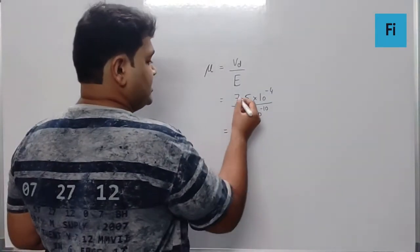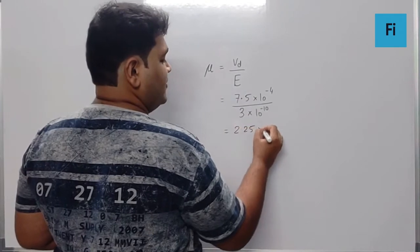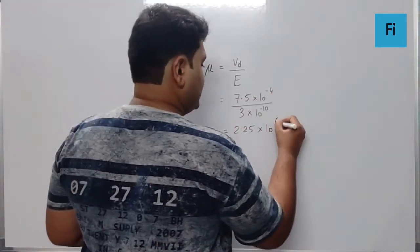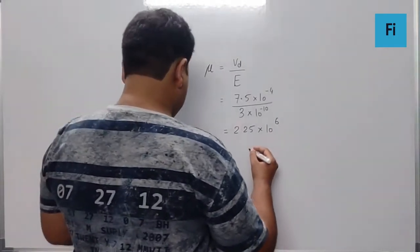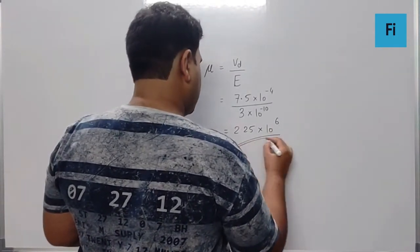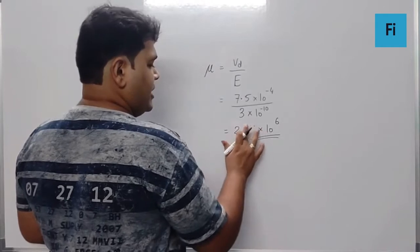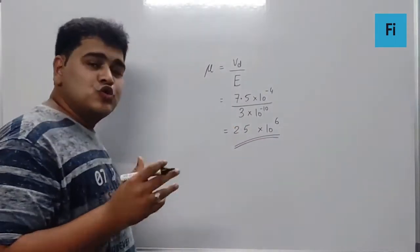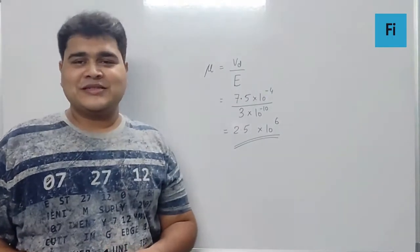That means this is going to be 2.25 × 10^(10-4) which is going to be 6. So our final answer is 2 point... oh sorry, my bad, this will be 2.5 because 3 × 2 is 6, 3 × 5 is 15. So 2.5 × 10^6 will be your answer.